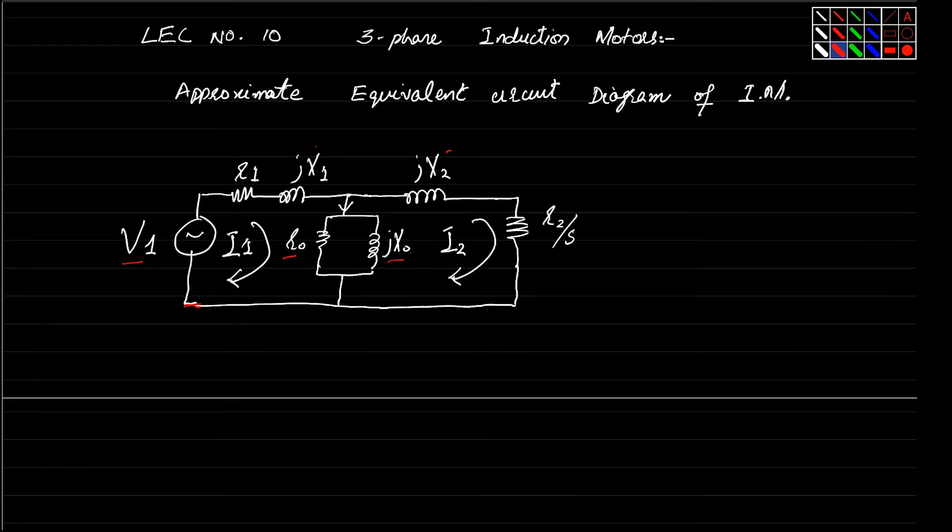Whereas R0 and jX0, these are the magnetization branches, presenting the eddy current and hysteresis loss. Now, this R2 by S is basically presenting how much load is connected to the induction motor.